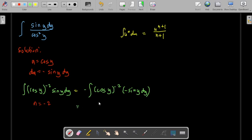the formula, we have u to the n, so that will be cosine y to the n plus 1, so negative 2 plus 1, then over n plus 1, so we have negative 2 plus 1. Okay, then this will be equal to